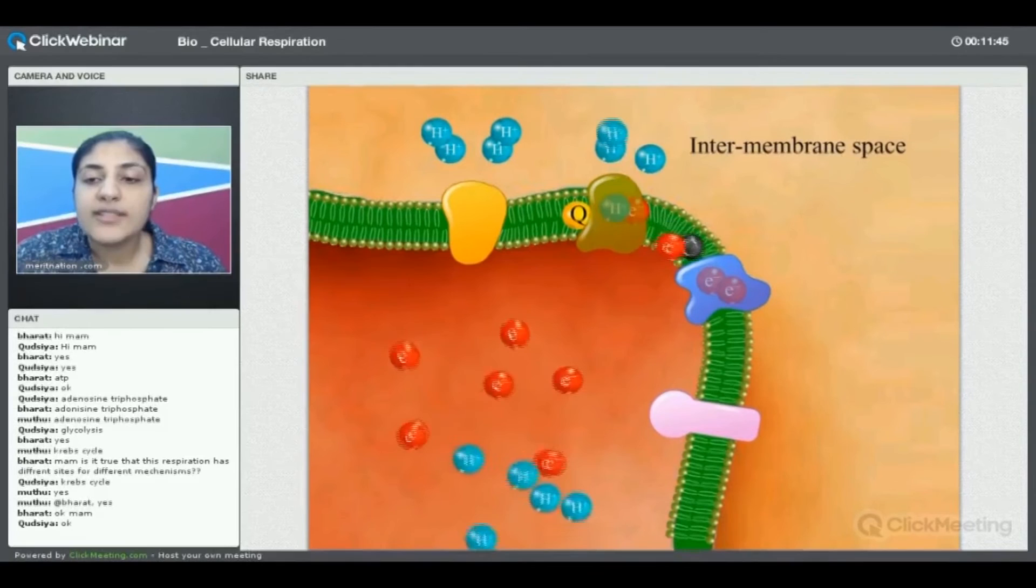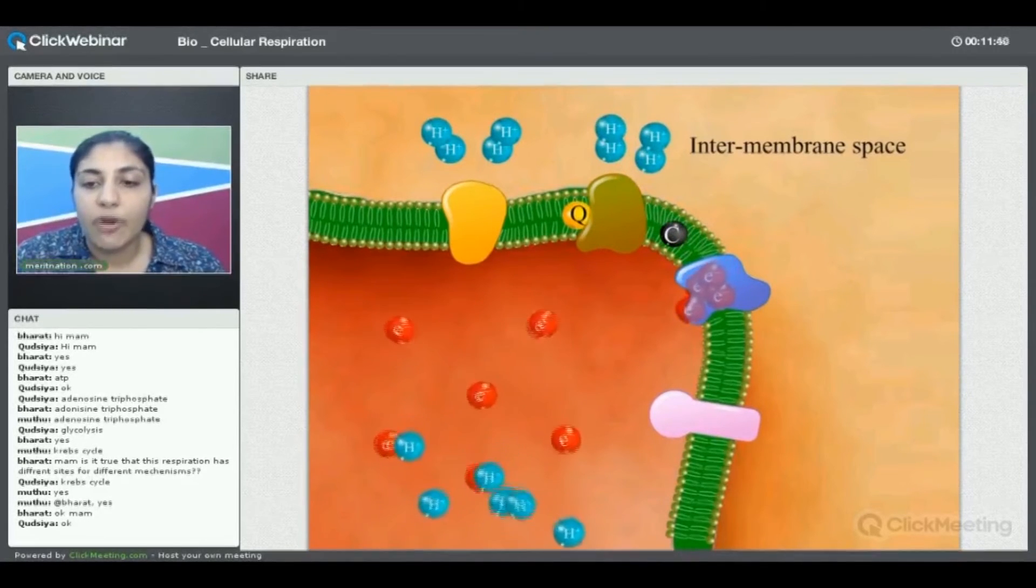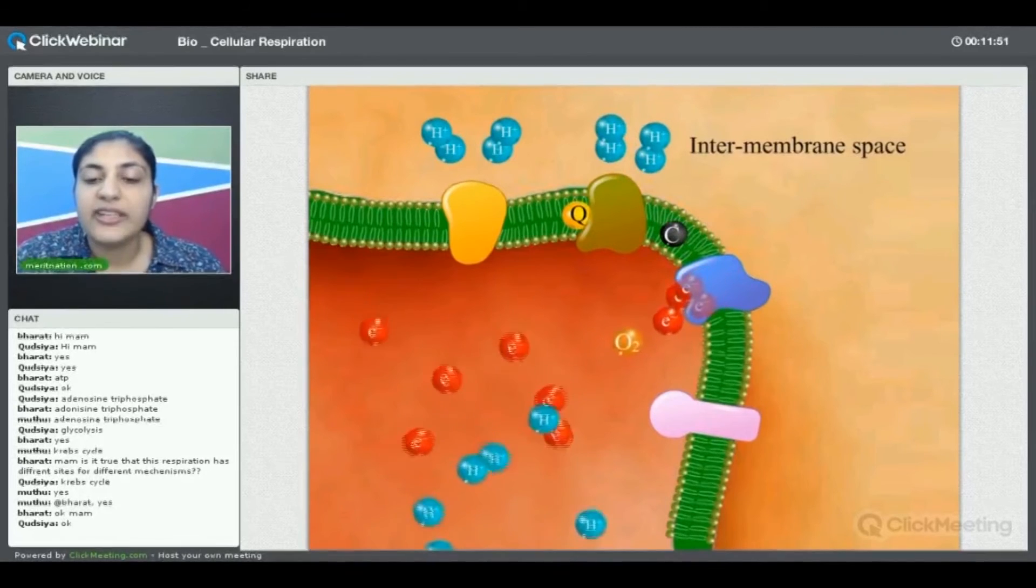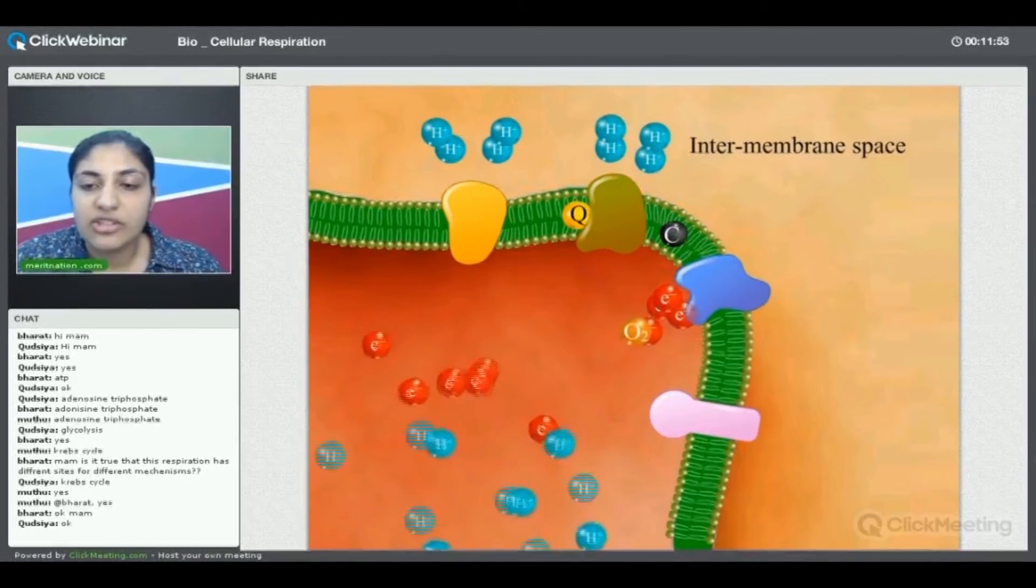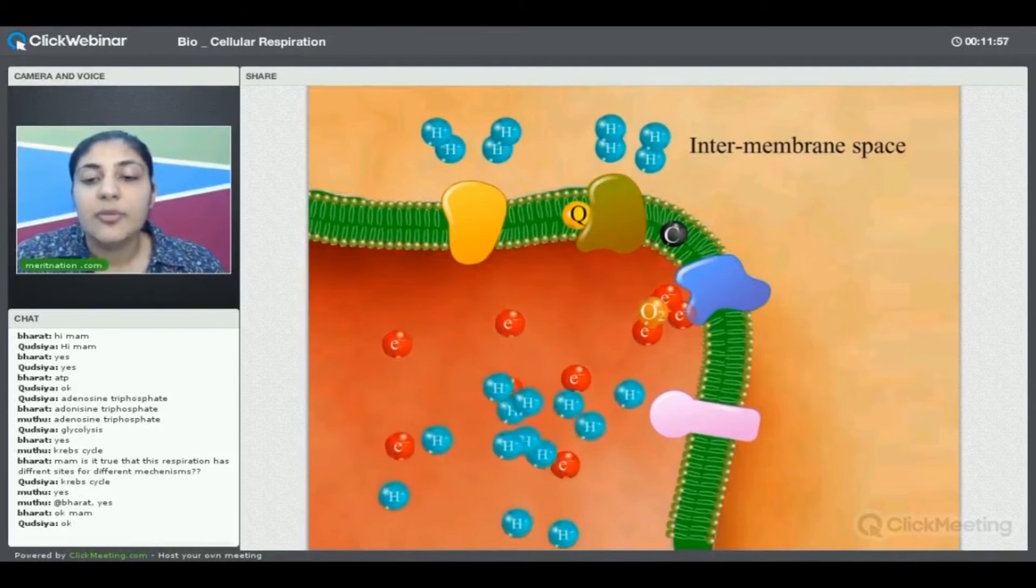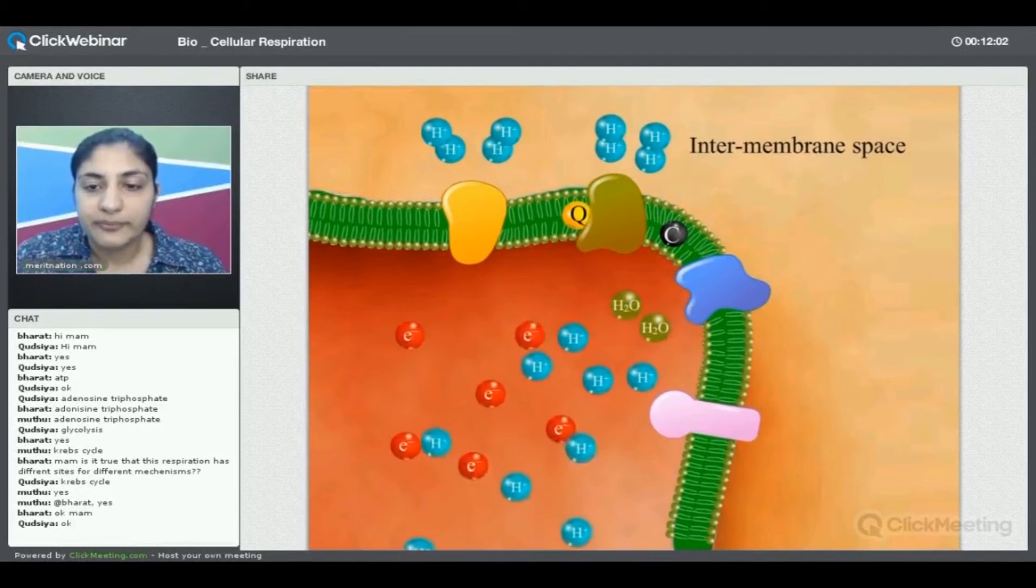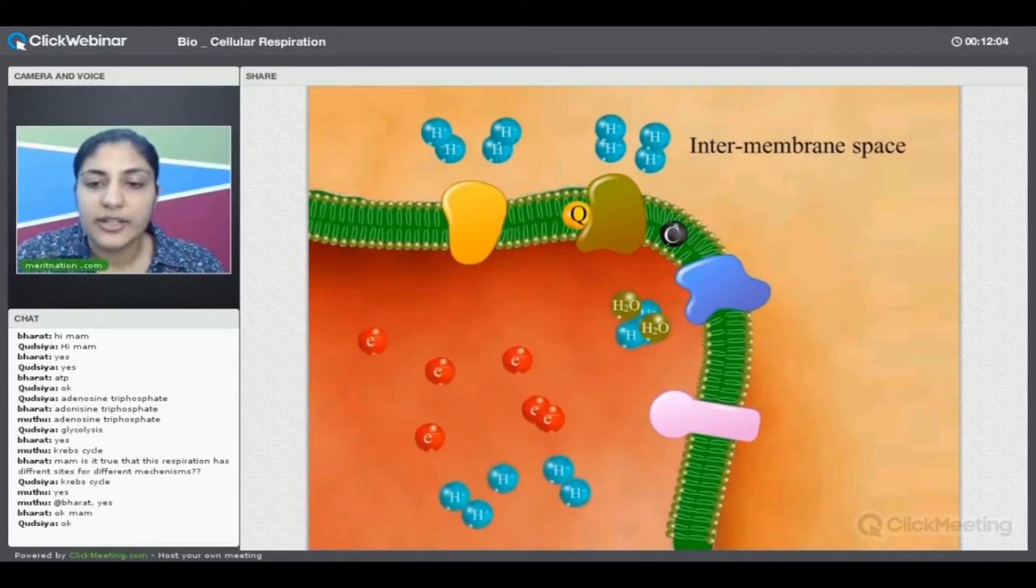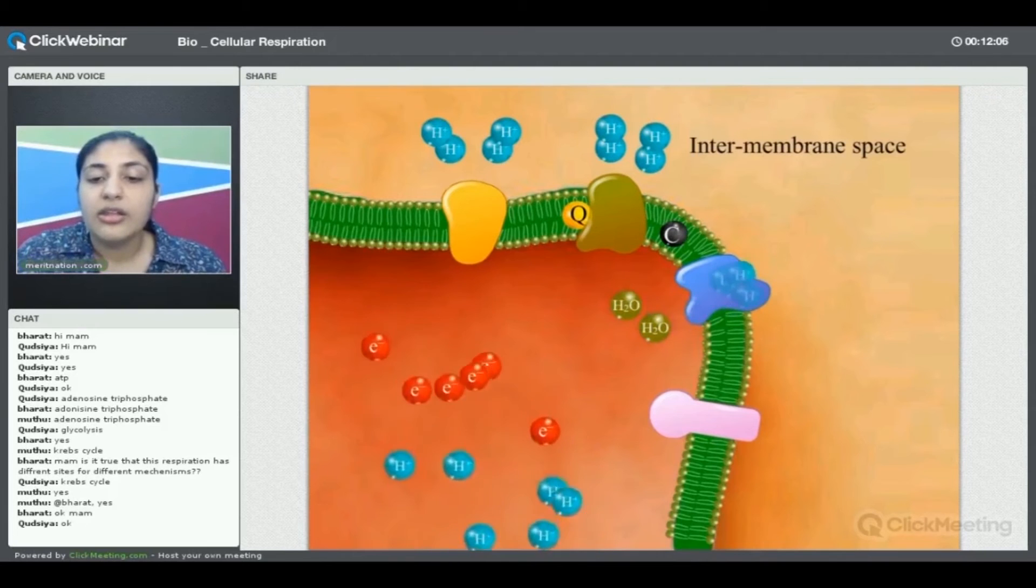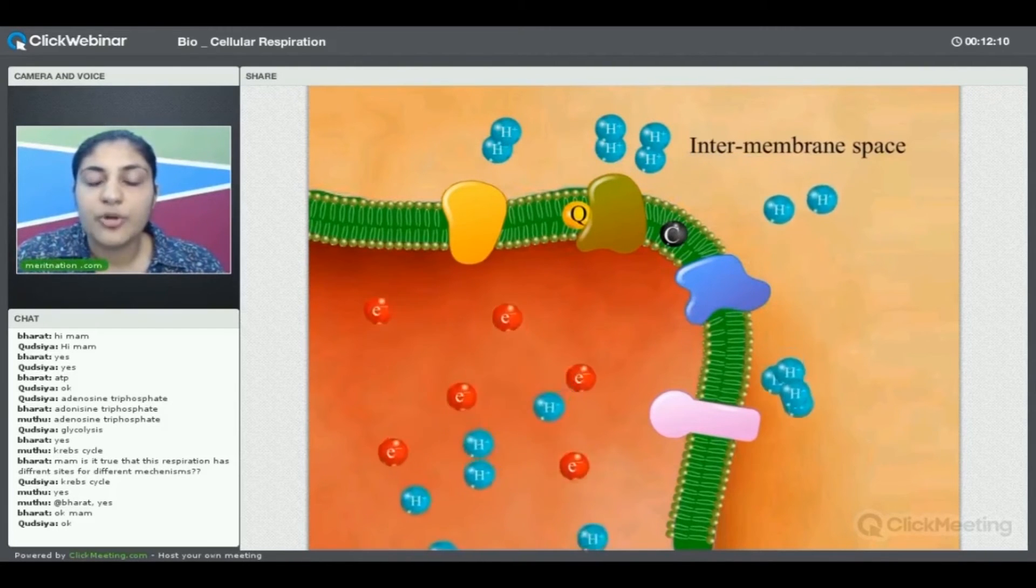Now in cytochrome oxidase, this is the place where water is formed. For that to happen we need four electrons, so two cycles of electron donation. Then it combines with protons as well as molecular oxygen to give us finally the water molecules.